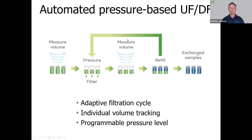The next part is our approach: automated pressure-based ultrafiltration and diafiltration. This approach is different and superior. It starts with measuring the volume of each individual well in an Unfilter, and you'll see why this is so critical. As we go into our buffer exchange cycles, we apply a uniform pressure across the entire Unfilter. The key part is that each buffer exchange cycle is adaptive — we re-measure the volume of every single individual well to essentially negate the possibility that you might dry out and lose one of your precious samples.